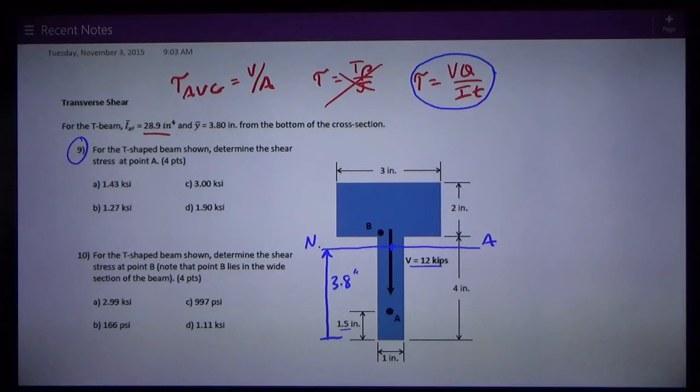So we say the shear stress at A is VQ over IT, and we know that V is 12 kips.